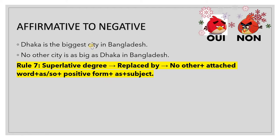We used the superlative degree in the original sentence. In the transformed version, it becomes the positive degree with 'as.' It is a simple rule: when using the superlative degree and transforming to the negative form, the superlative word changes into the positive form, and the other words fall into place automatically.